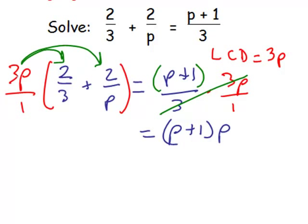On the left side, as we distribute 3p, we're going to be careful about it and think what happens. As we multiply this times the very first fraction, the 3 and the 3 divide out, and so we're left with just p times 2, or 2p, plus, as we distribute that to the second fraction 2 over p, the p's divide out, and we're left with 3 times 2, which is 6.